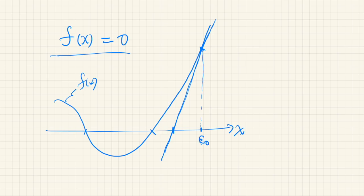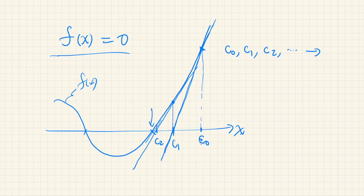So let's start from C0 and C1, then use this second guess to find yet another tangent line. We draw the tangent line and find the x-intercept again — that will be C2, a better approximation. The true solution is here. We continue this process over and over, generating a sequence C0, C1, C2 and so on that converges to a solution, let's say alpha. This is the idea — it's very simple.